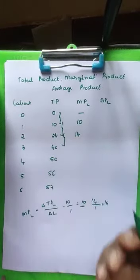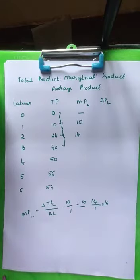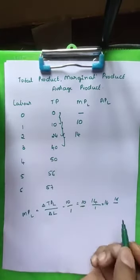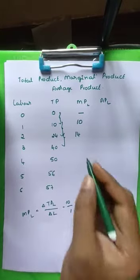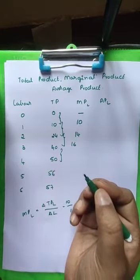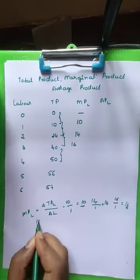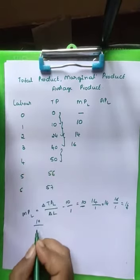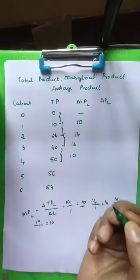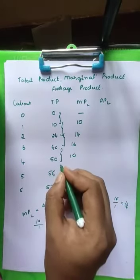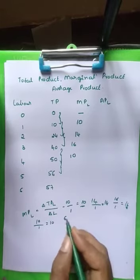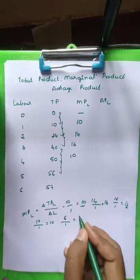Next, 40 minus 24 is 16, divided by 3 minus 2 which is 1, so 16 divided by 1 equals 16 — the marginal product is 16. Next, 50 minus 40 is 10, divided by 4 minus 3 which is 1, so 10 divided by 1 equals 10 — the marginal product is 10. Then, 56 minus 50 is 6, divided by 5 minus 4 which is 1, so the marginal product is 6.